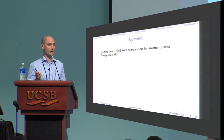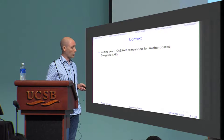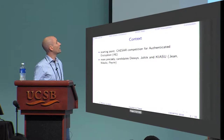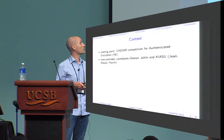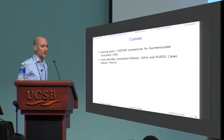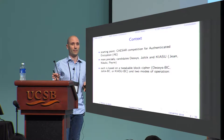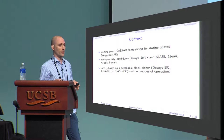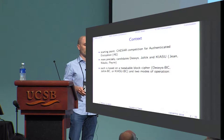The starting point is the ongoing CESAR competition for authenticated encryption, and more precisely the three candidates — Deoxys, Joltik, and Chiasu — by the same team of designers: Jérémie Jean, Yves Saint-Nikodic, and Thomas Perrin. Each of these candidates is based on a dedicated tweakable block cipher and two specific modes of operation.